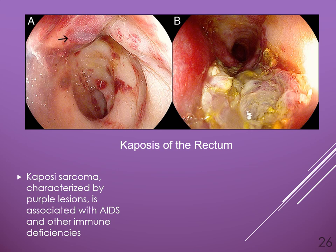We do see Kaposi's sarcoma in surgery when lesions have developed in the esophagus or intestinal tract and are blocking the passage of contents. The patient may need a bowel resection or some sort of colostomy to remove these lesions.